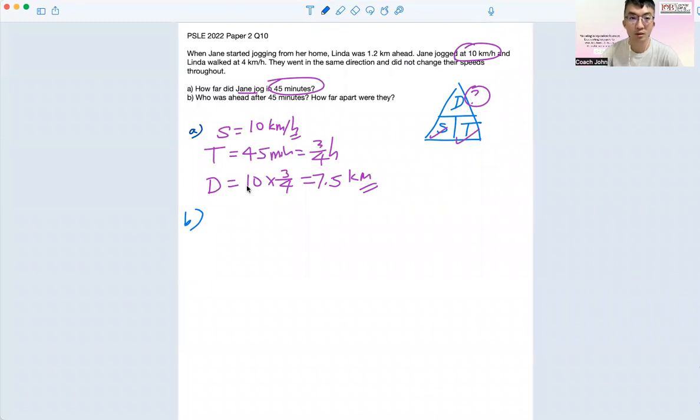Okay, so for B, who was ahead after 45 minutes? So when we see ahead, we're still talking about distance. So again, we need to look at D, S, and T. And to find D, we need to activate S and T. So looking at that, this part is Jane. So we need to look at, it's comparing with Linda.